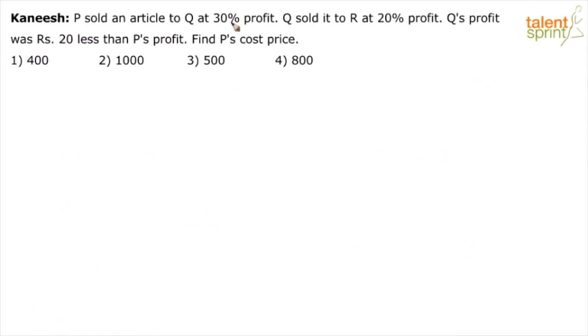P sold an article to Q at a profit of 30%. Q sold it to R at 20% profit. Q's profit was rupees 20 less than P's profit. Find P's cost price.